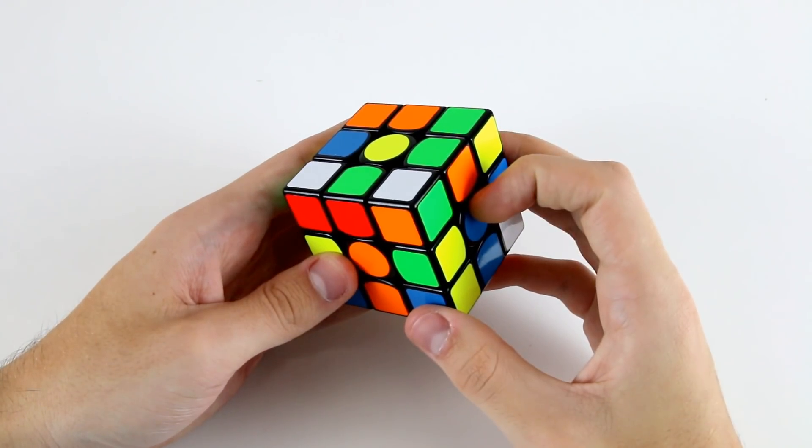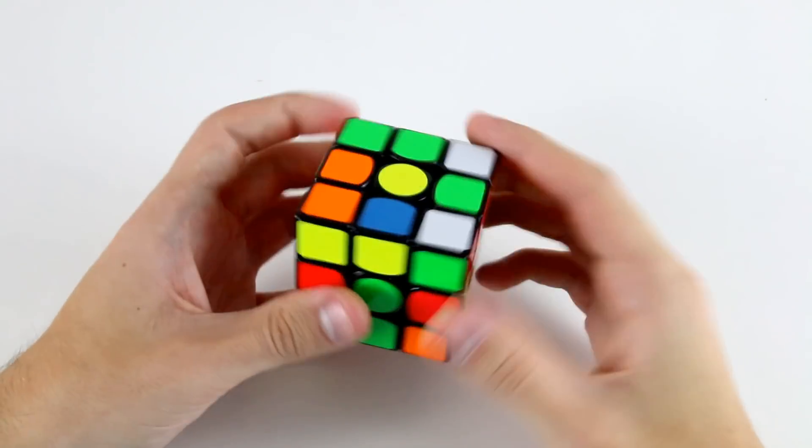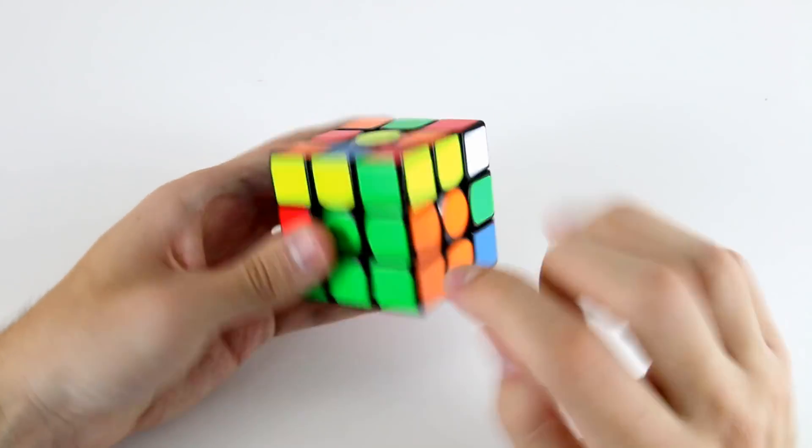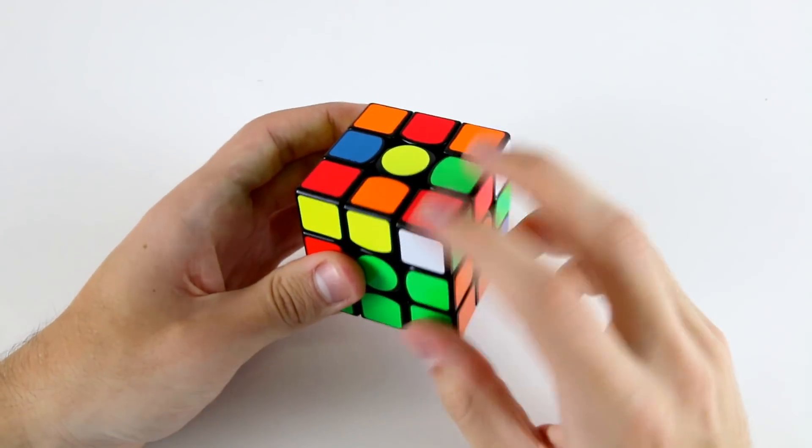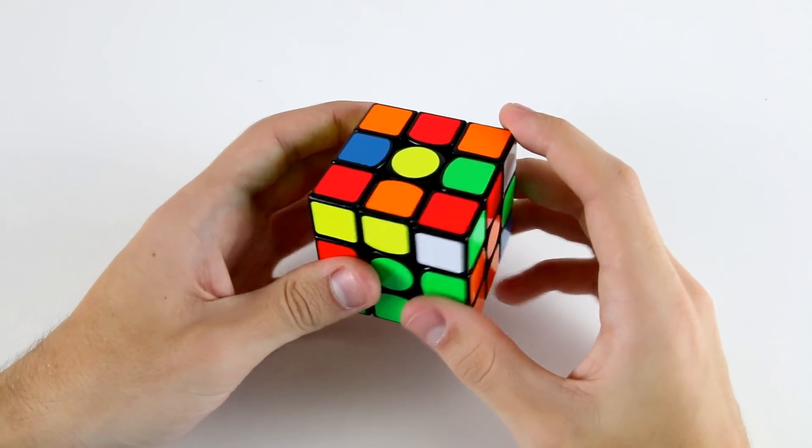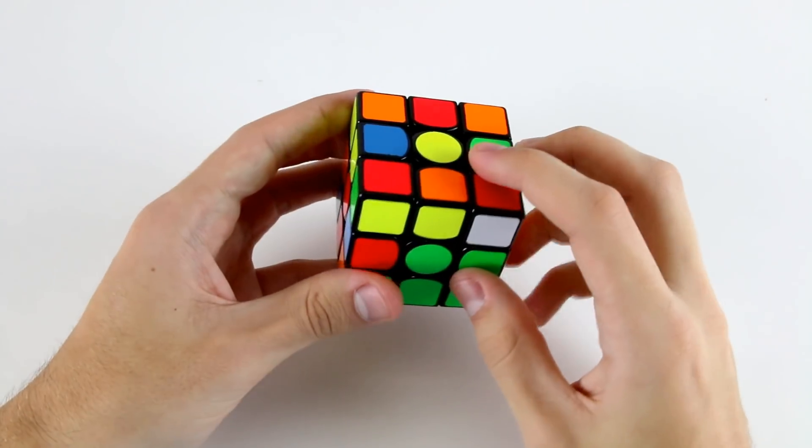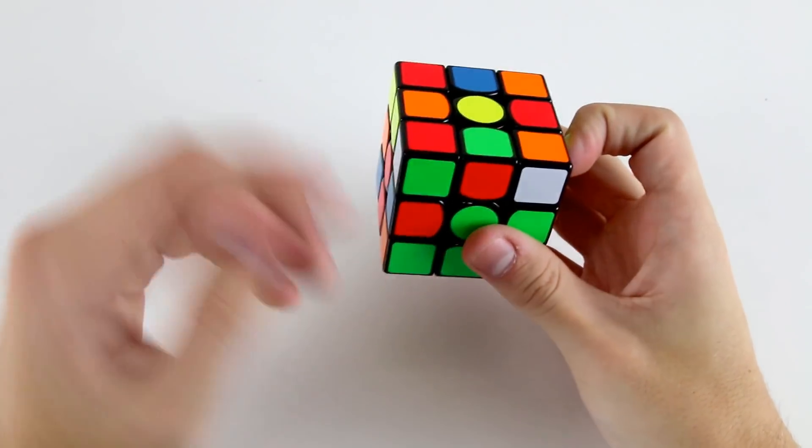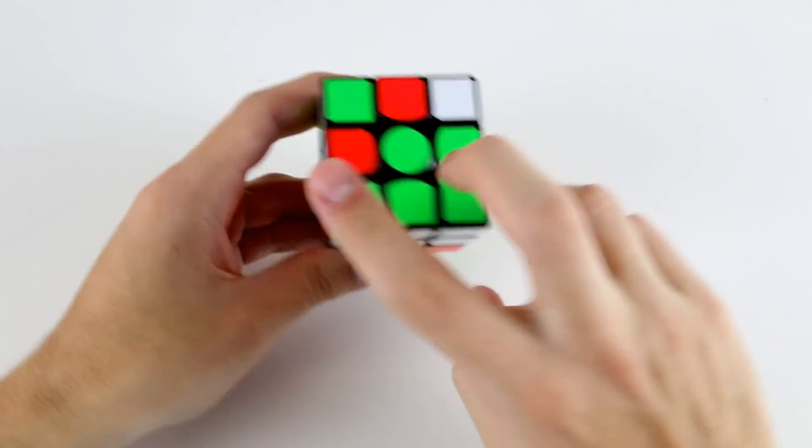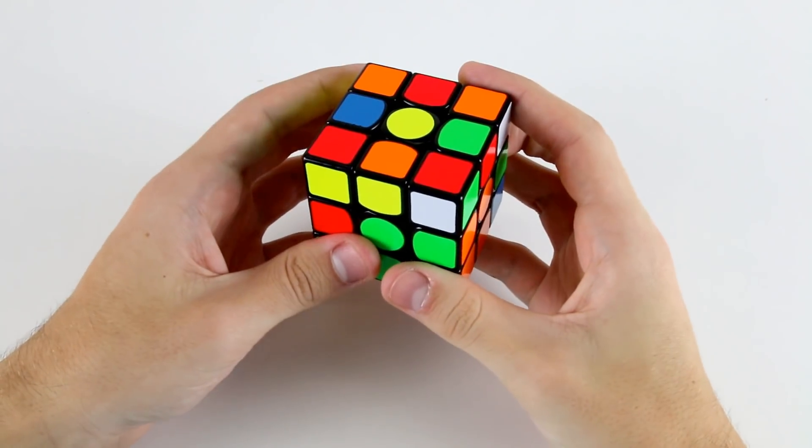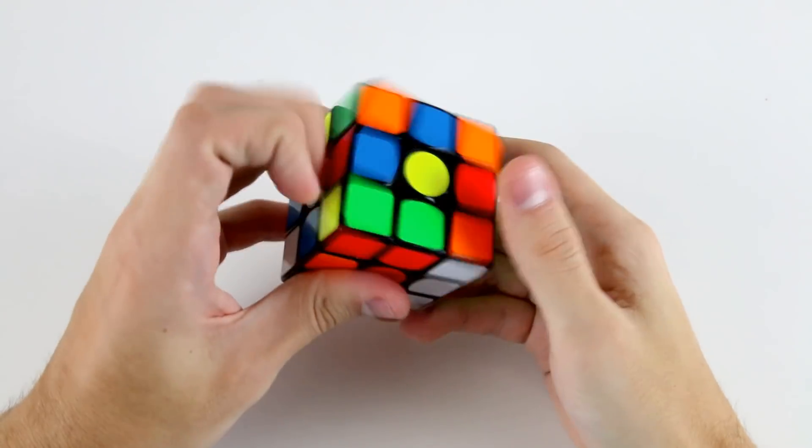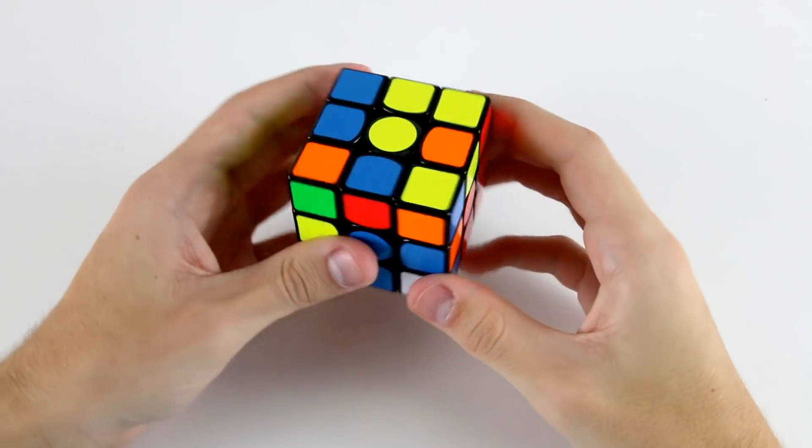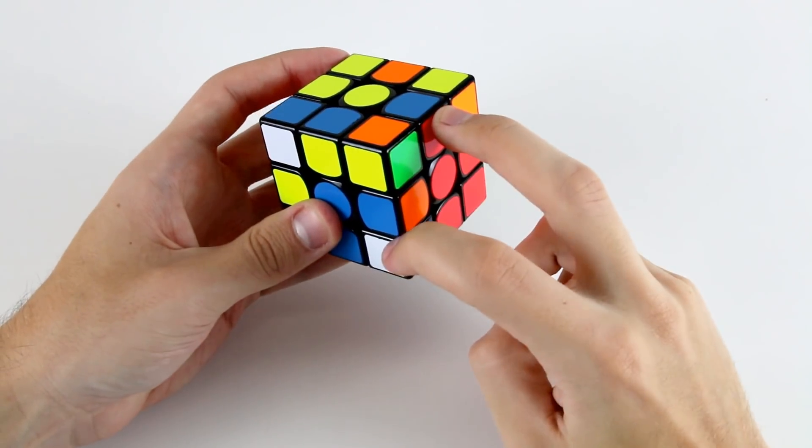We've got this f2l pair that I'll do first into that slot, then I've got these two, and I'm going to work it so that I end up with these two blocks at the back, this solved f2l block at the back. So instead of solving this pair here and ending up with two solved slots in the front, I can rotate and insert them there.